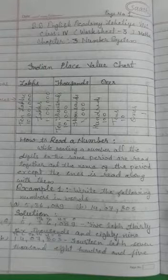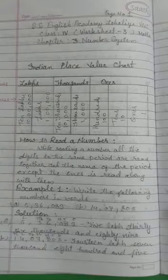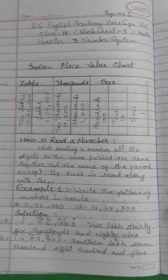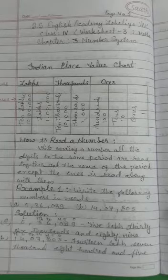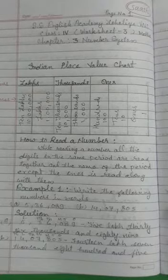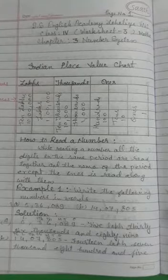Number system. We may express numbers in figures as well as in words. The group of figures representing a number is called the numeral for the number. Here is the Indian place value chart system.